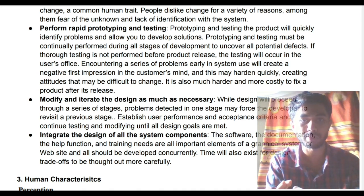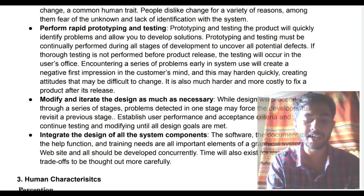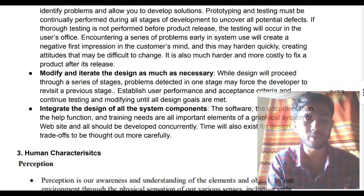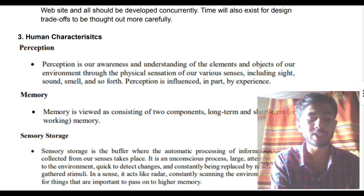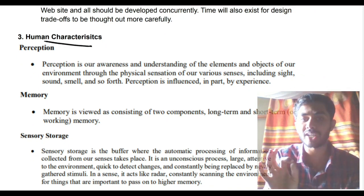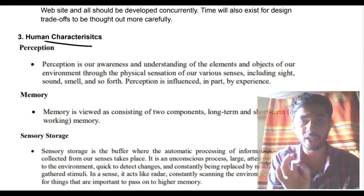You can easily write and elaborate on those five commandments — make sure you don't miss this question, it's very important from an exam point of view. After that we have human characteristics, which is also a very super important question: you have to mention what are the human characteristics present in the UI field.